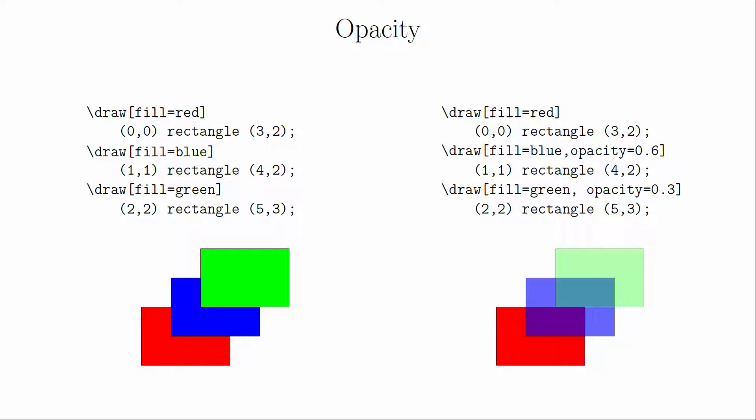There's so much more, including three-dimensional coordinate systems, fancy node diagrams, mind maps, and trees. Furthermore, if you happen to use Geogebra, there's an export to ticks command that will let you export your diagrams and graphs. But you'll have to explore those on your own.